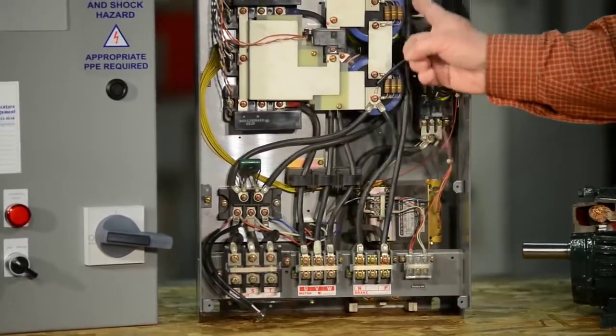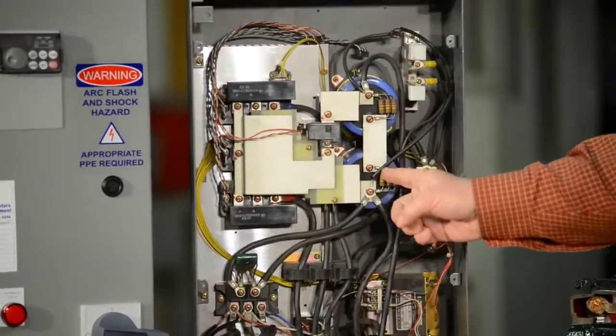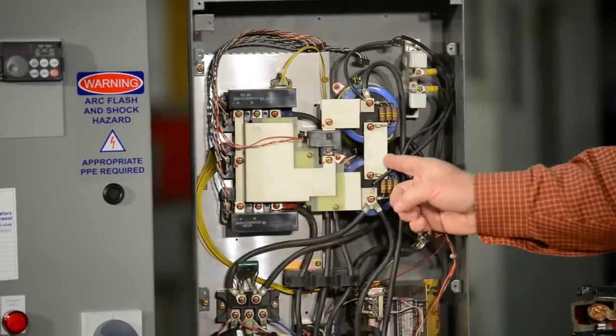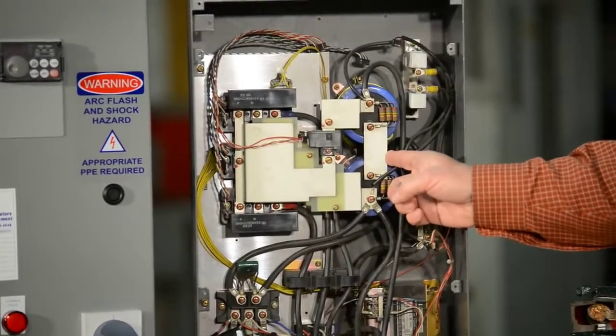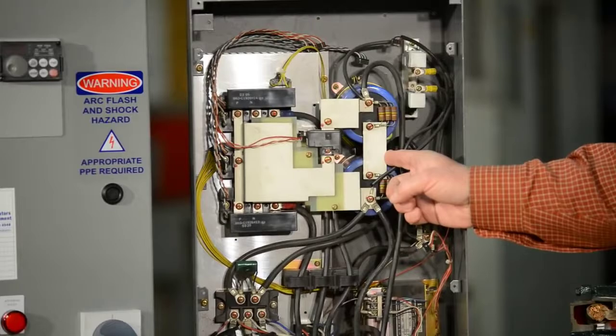Then we come up here, these two blue cylinders are called capacitors. These are electrolytic capacitors that smooth out that DC.